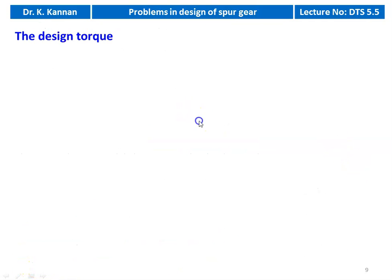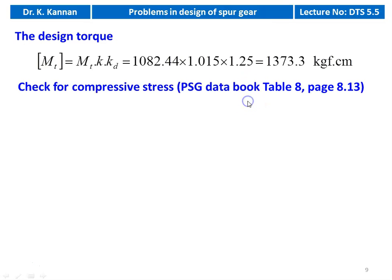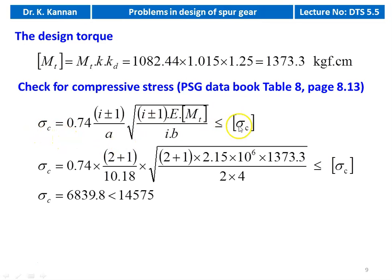Design torque [MT] = MT × K × Kd = 1082.44 × 1.015 × 1.25 = 1,373.3 kgf·cm. Check for compressive stress: we calculate the actual compressive stress and verify against the design value calculated earlier. The actual compressive stress equation is on page 8.13: σc = 0.74 × (i ± 1) / A × √[(i ± 1) × E × [MT] / (i × B)].